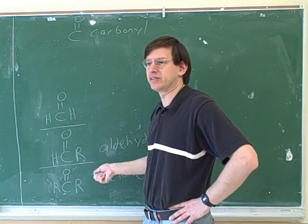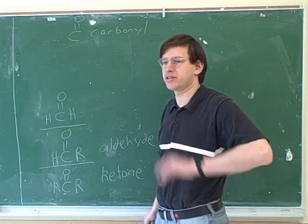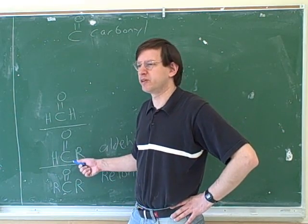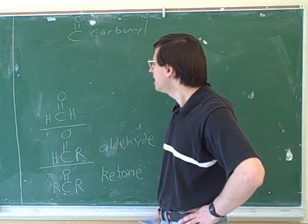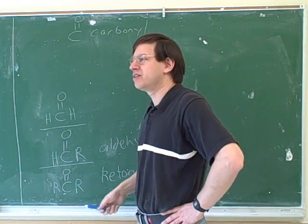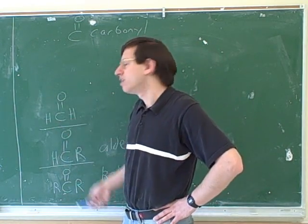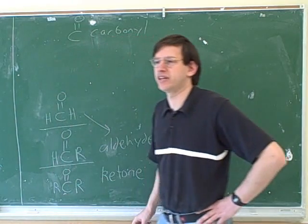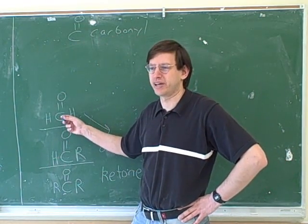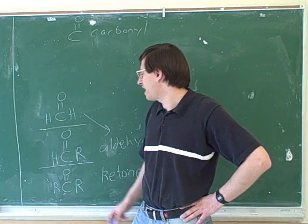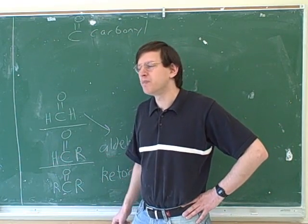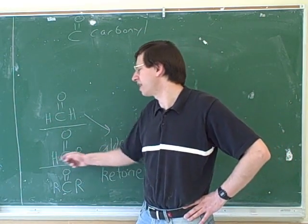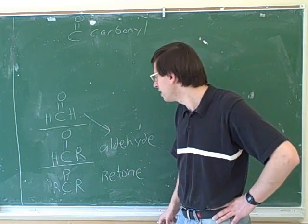Remember, aldehyde and ketone are both types of carbonyls. It's more useful to be specific — say 'aldehyde' rather than just 'carbonyl.' There's also a special case: the smallest aldehyde has just one carbon with two hydrogens attached. That exception must be memorized separately; all other aldehydes have one hydrogen and one carbon chain.